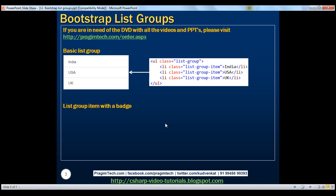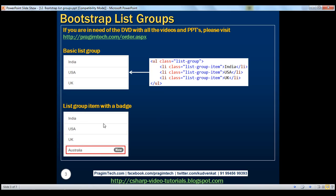Now let's create a list group item with a badge. If you look at this list group right here, Australia is a new country. Since it's a new country, I want to display this badge 'new' on the right-hand side of the country. Let's see how to create this list group item with a badge.